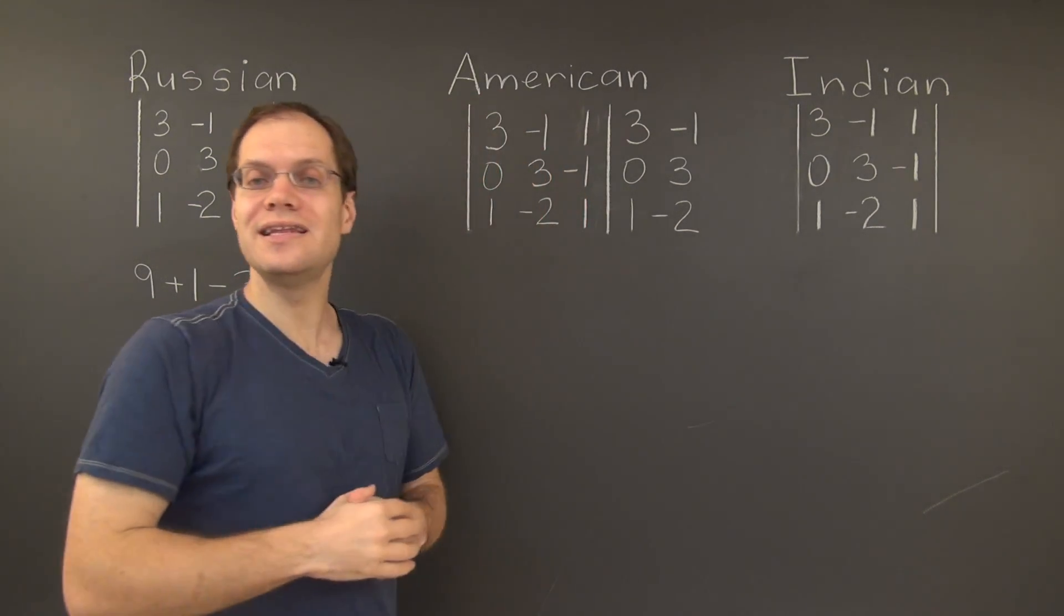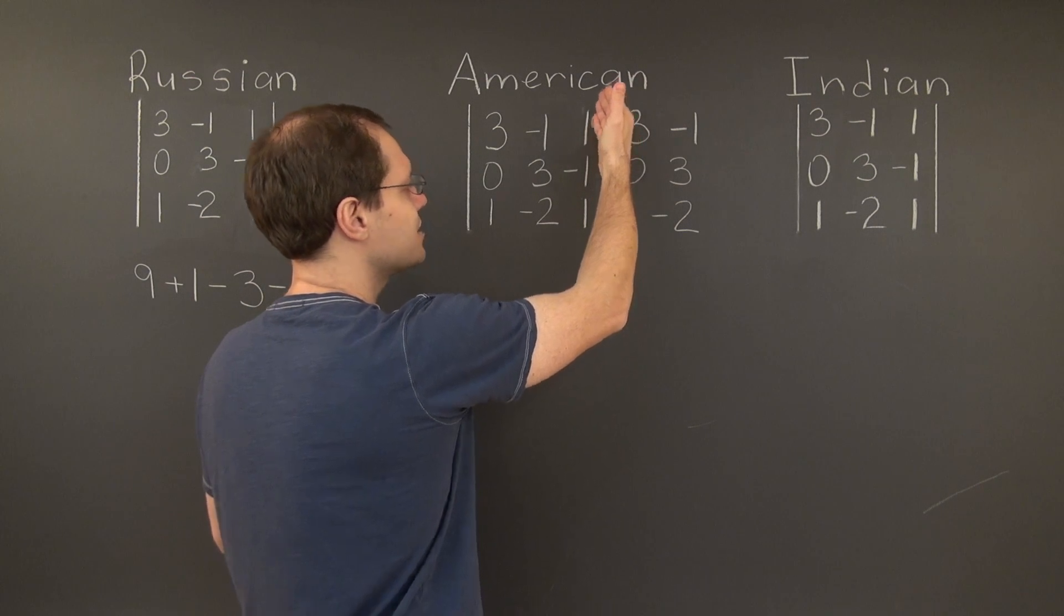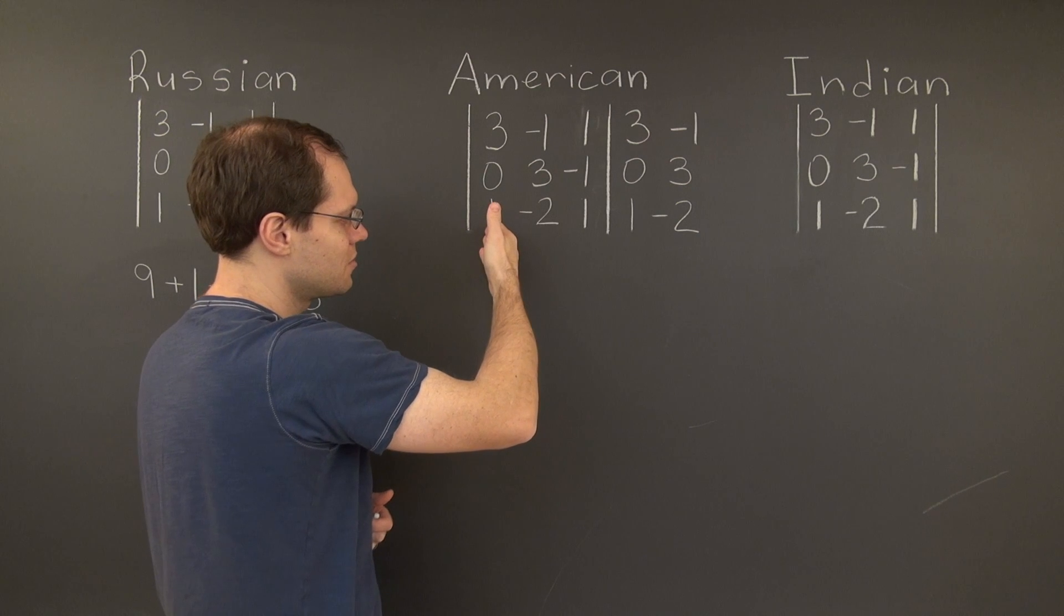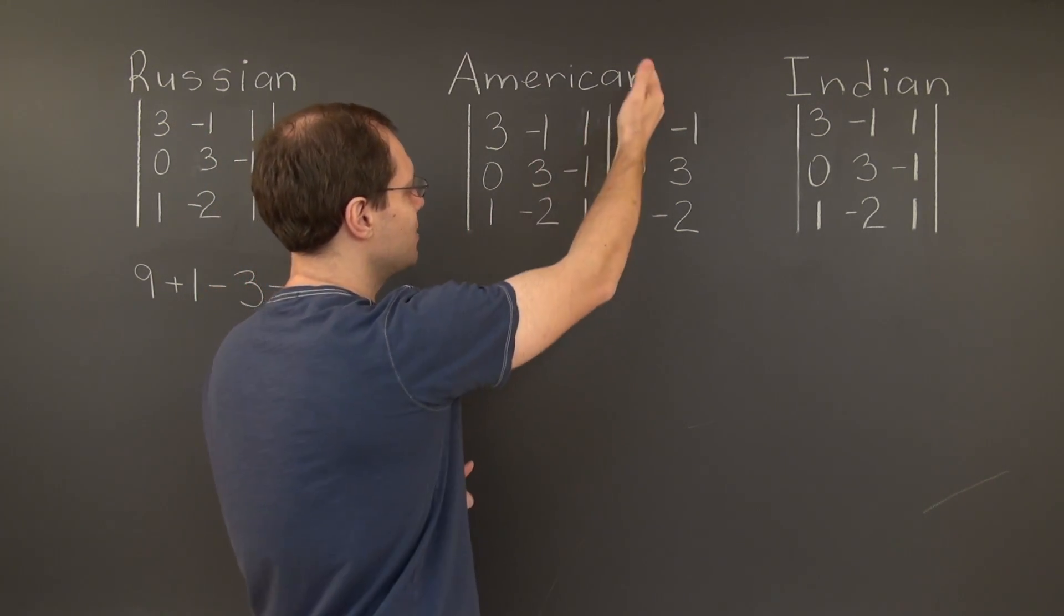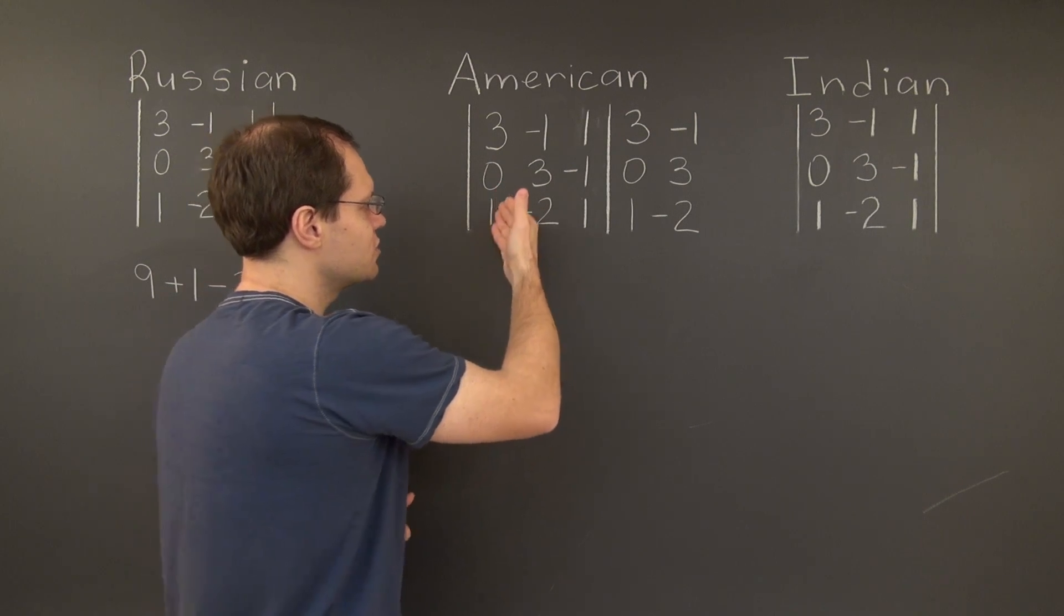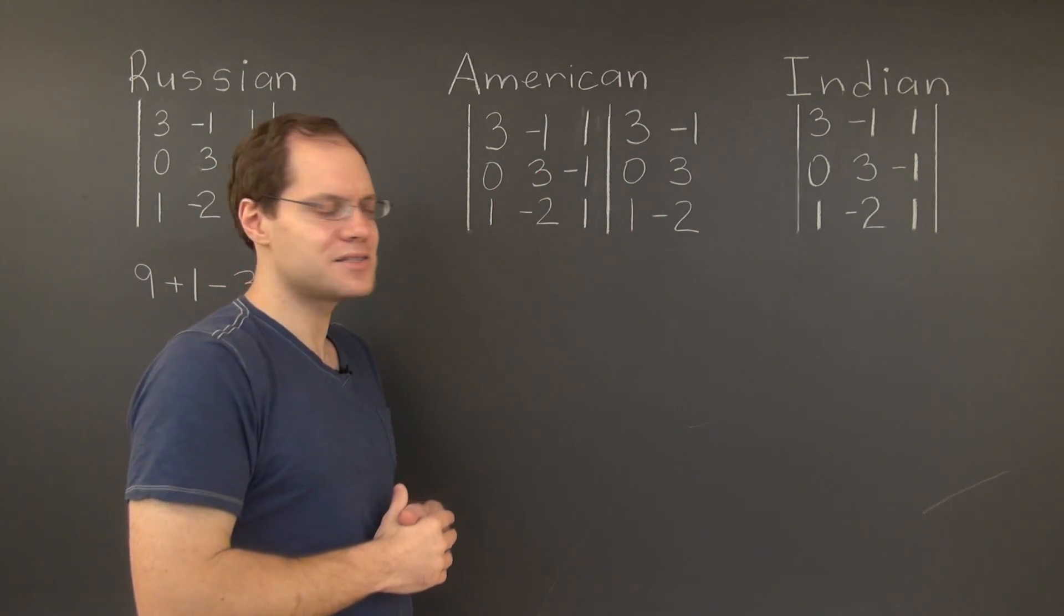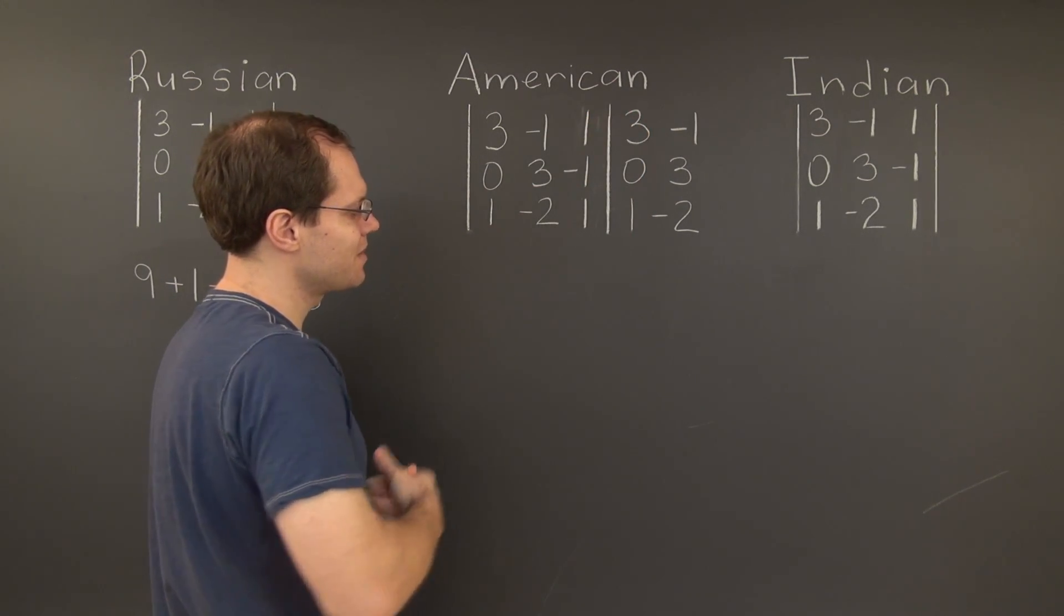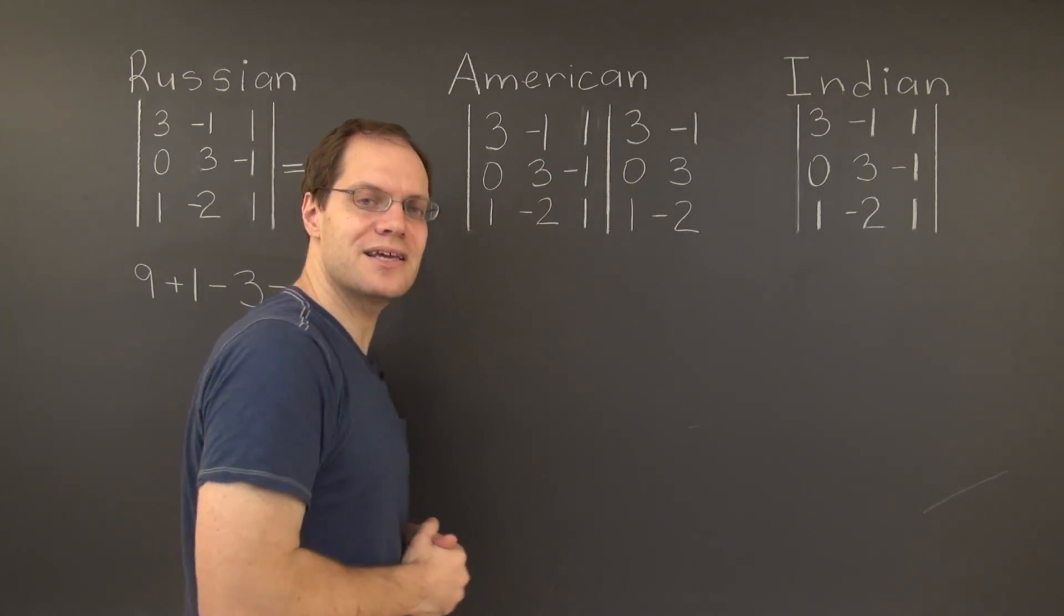Now on to the negative terms. And here's the first negative term. Some people like going down. So you would start with these numbers and go down and to the left. But let's go with what we described before and start on the bottom here and go up and to the right. So here's the first term and it's 3. And so it contributes a minus 3. Here's the second and it contributes a minus 6. And here's the last one that contributes 0 because of this 0 right here.